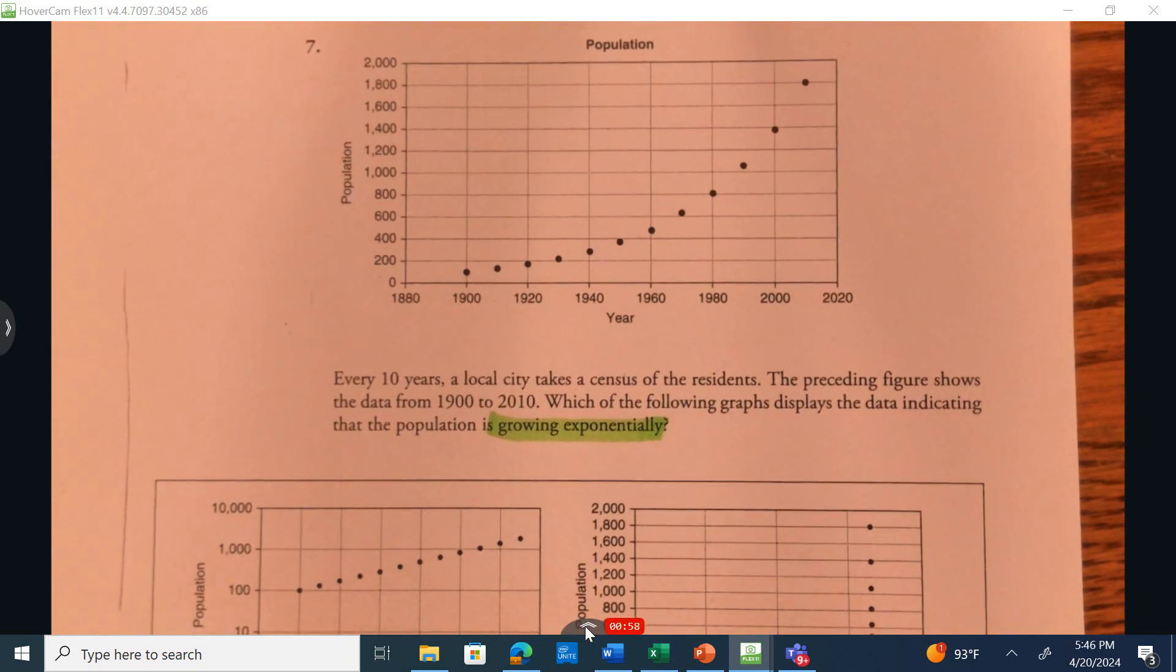So when we look here, we're looking at the census of residents every 10 years in a local city. And this is specifically from 1900 to 2010. And we want to choose which of the following graphs displays this data indicating the population is growing exponentially.